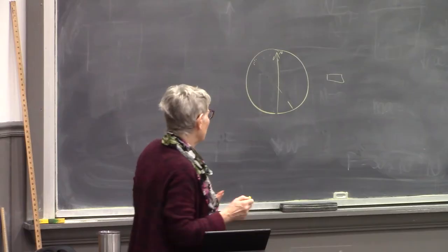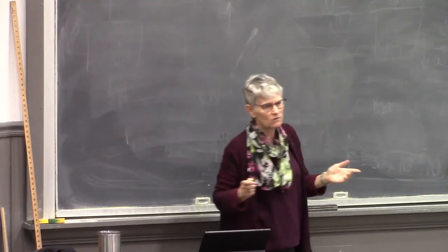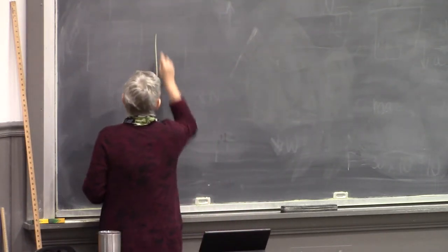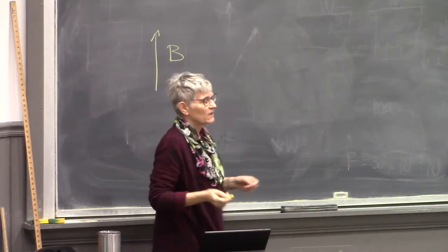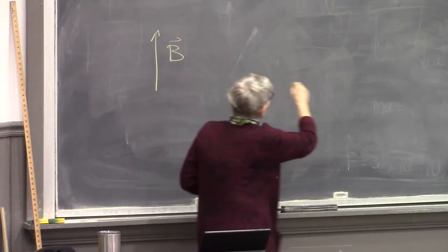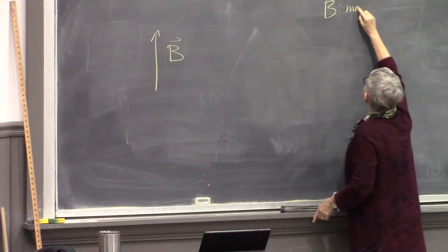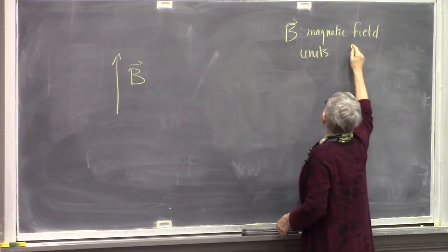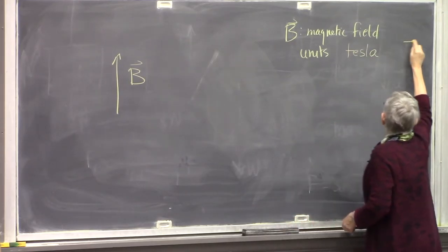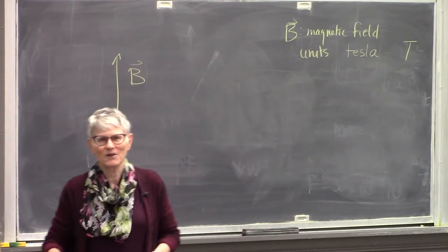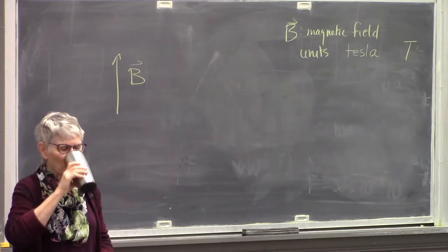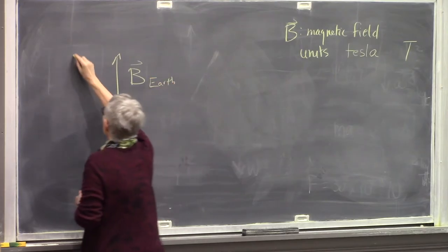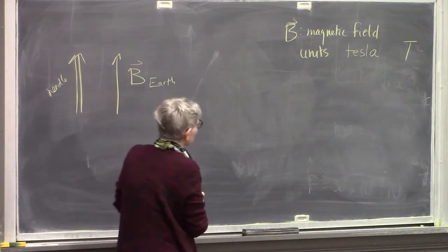So we can be quantitative about this — you'll need to know this for lab. Magnetic field has the symbol B and it's a vector. Its units are Tesla, capital T — named not for the car, but for the inventor. So if we have just the Earth's magnetic field, our compass needle points that way.